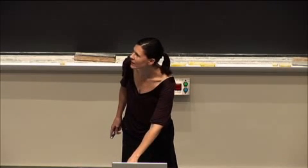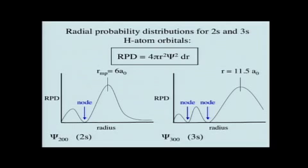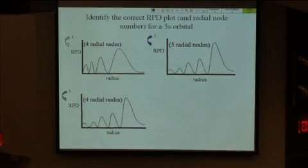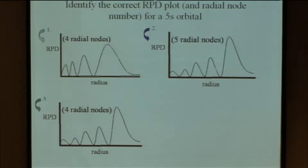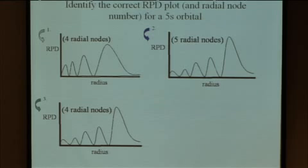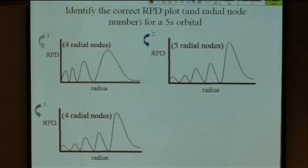Let's go to a clicker question now on radial probability distributions. You should be able to identify both how many nodes you have and what a graph might look like for different radial probability distributions. Identify the correct radial probability distribution plot for a 5s orbital, and make sure it matches the right number of radial nodes you would expect.